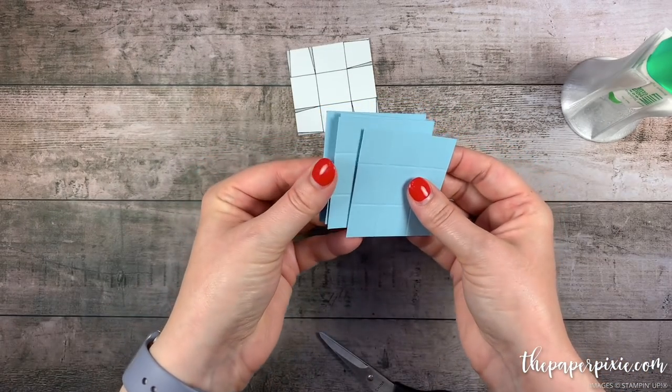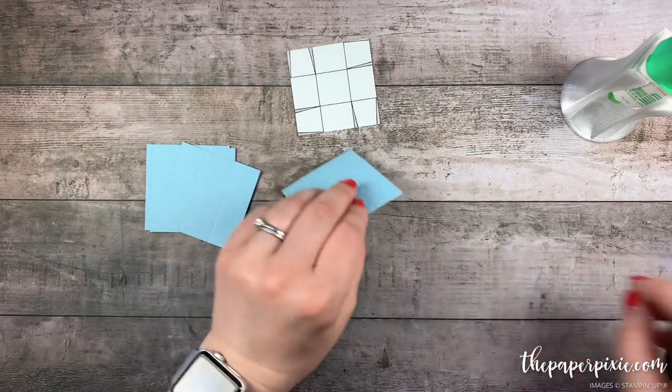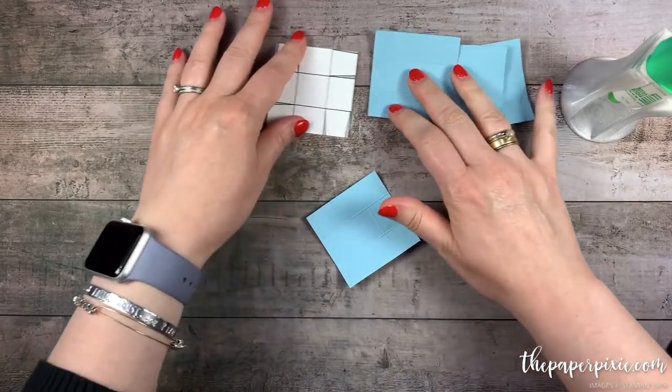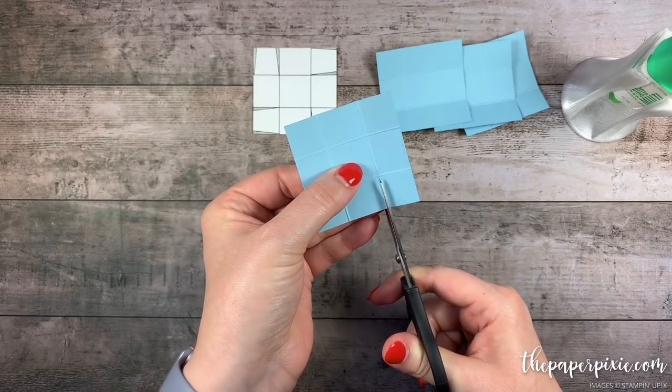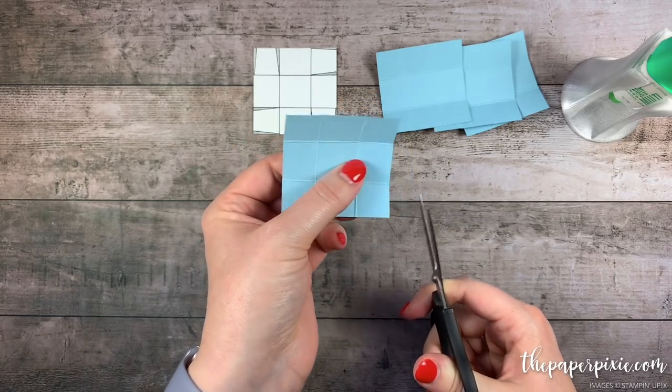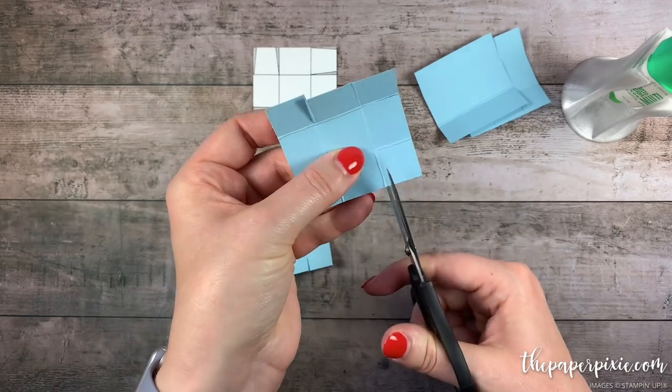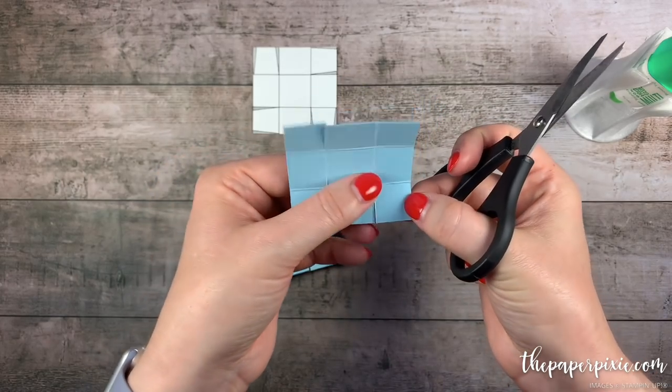Now we're going to work on the balmy blue pieces and we're going to create these in the same way that we created the lid so I'm going to fold and burnish on all the score lines. All right then we're going to come in and cut up the vertical score line stopping at the horizontal. We'll do that on all four pieces rotating a quarter of a turn each time. And then we're going to come in and notch all of the tabs.